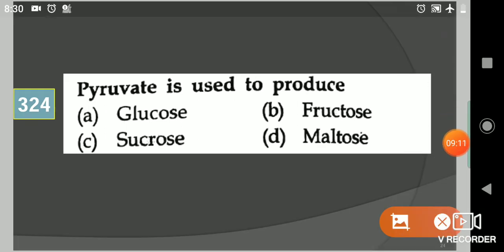Next question: Pyruvate is used to produce? Your options are glucose, fructose, sucrose, maltose. Your answer is glucose.